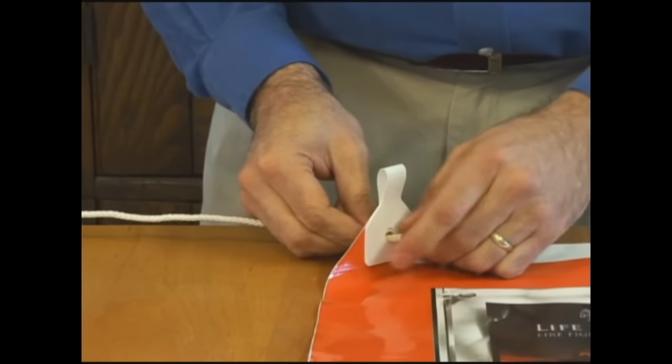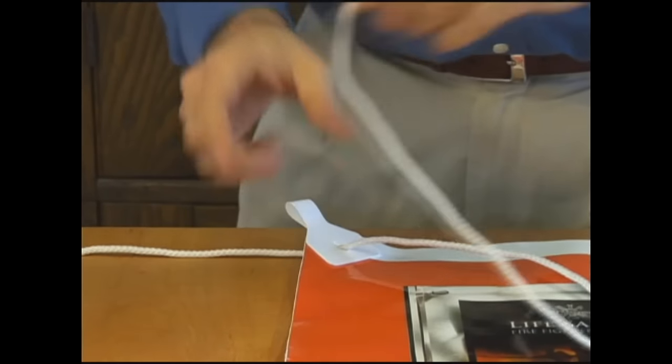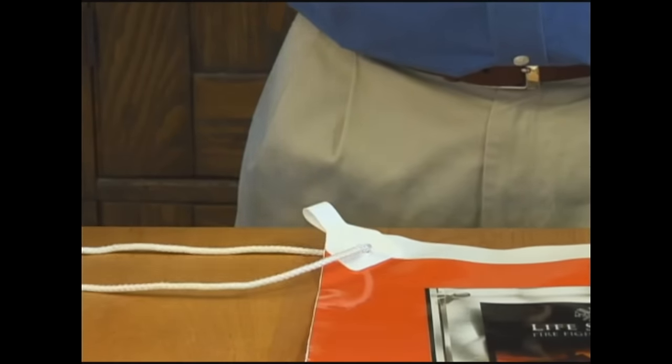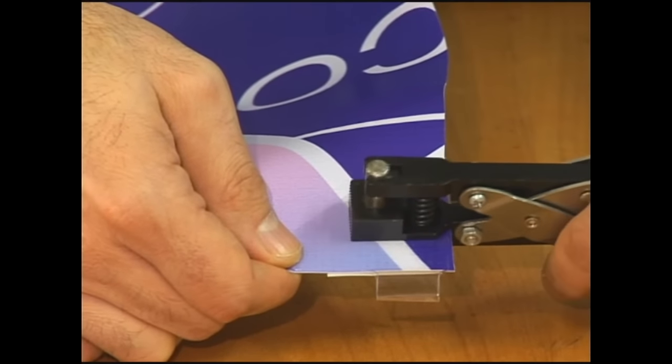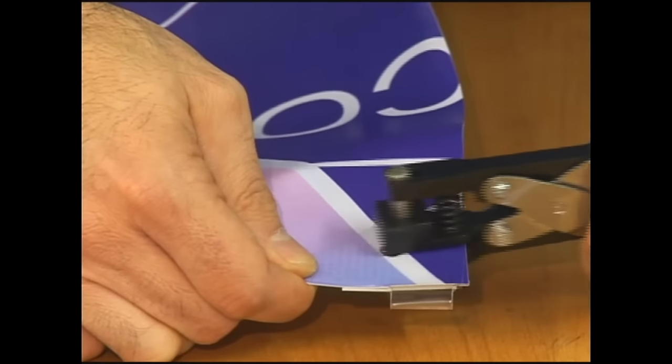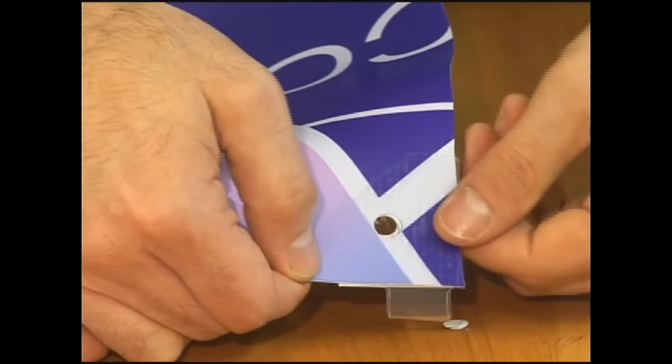For heavy duty banners or outdoor use, we recommend that you run the rope through the tab's pre-cut center hole. Just punch a hole through the banner material after the tab is installed using a hand punch.